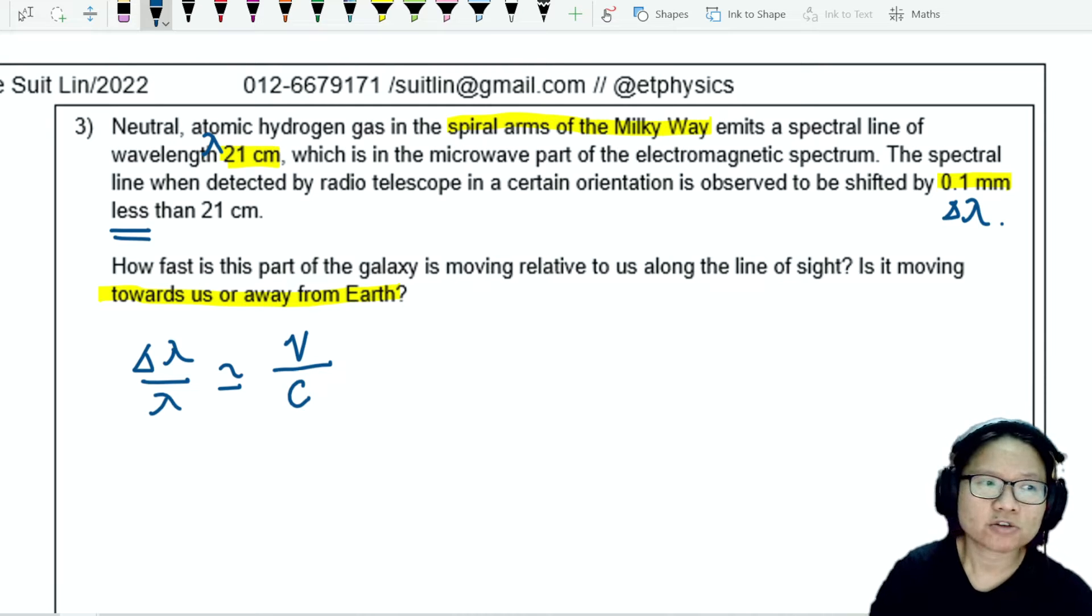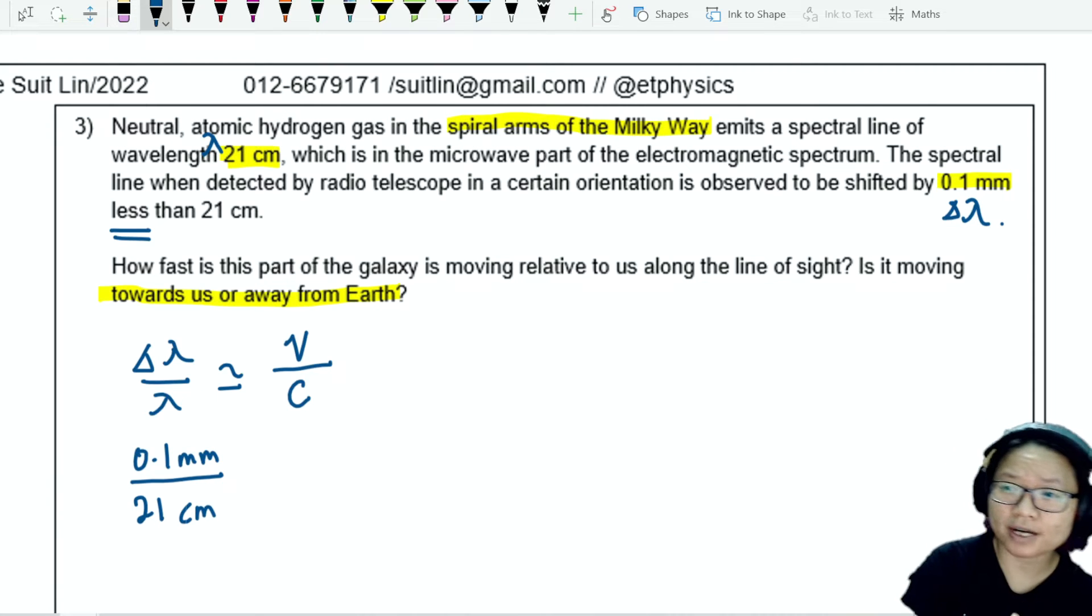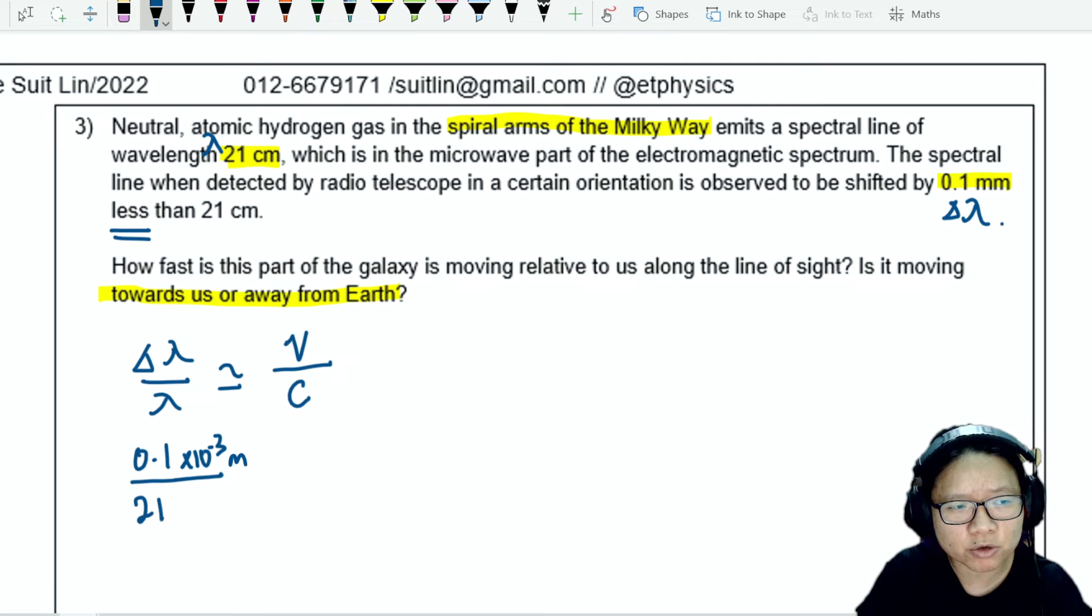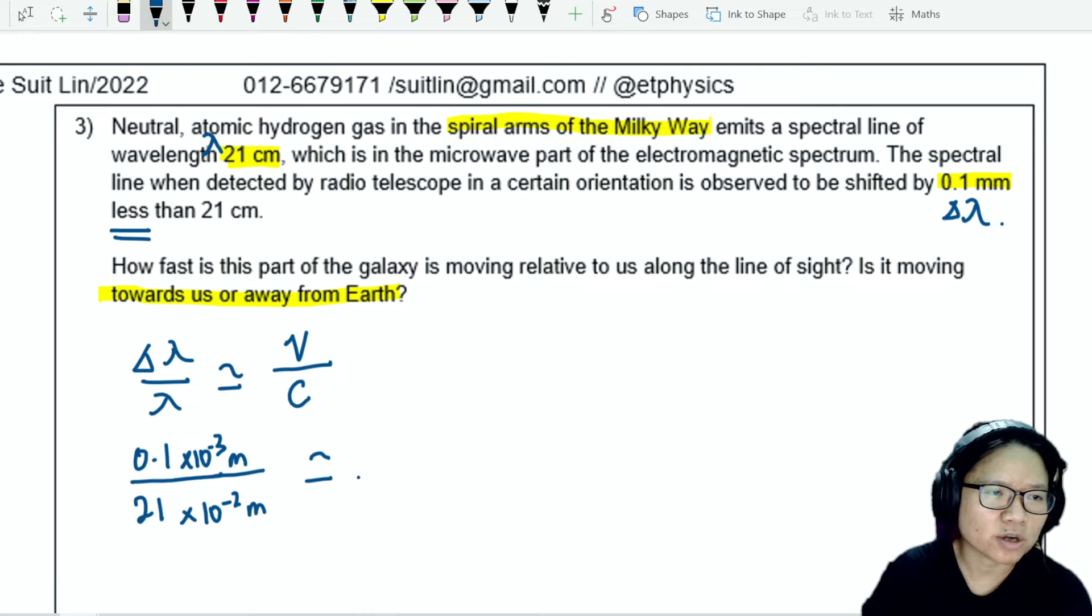Right now we can look at the shift of wavelength 0.1 mm. The original wavelength is 21 cm. Wait, you cannot ratio two things that have different units, so you got to change. I'm just going to stick to millimeter and centimeter.